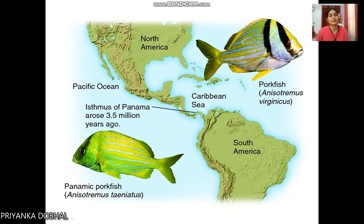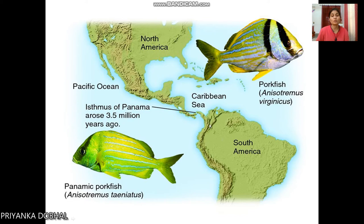A classic example of a geographical barrier is the Isthmus of Panama, which separates the Pacific Ocean from the Caribbean Sea. A porpoise fish that was once a single population in this area became differentiated — one population living in the Caribbean Sea and the other in the Pacific Ocean — showing isolation due to differences in behavior and body structure.